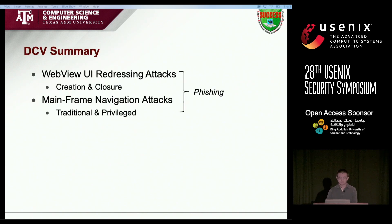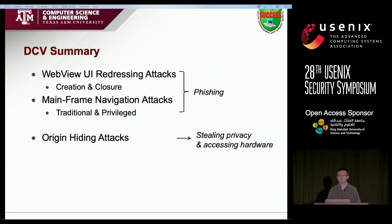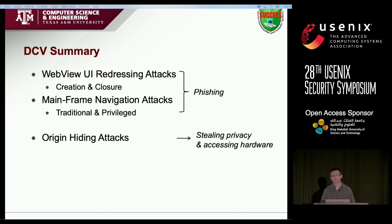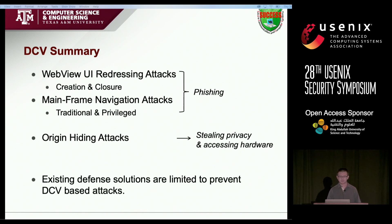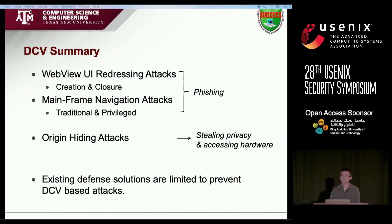In addition to the UI redressing attack and navigation attack, we found attackers can also hide their own malicious origins. For example, malicious attackers may directly steal sensitive information or access sensitive hardware like the camera, without any limitations. We also showed in our paper that all existing defense solutions are unable to prevent DCV-based attacks.